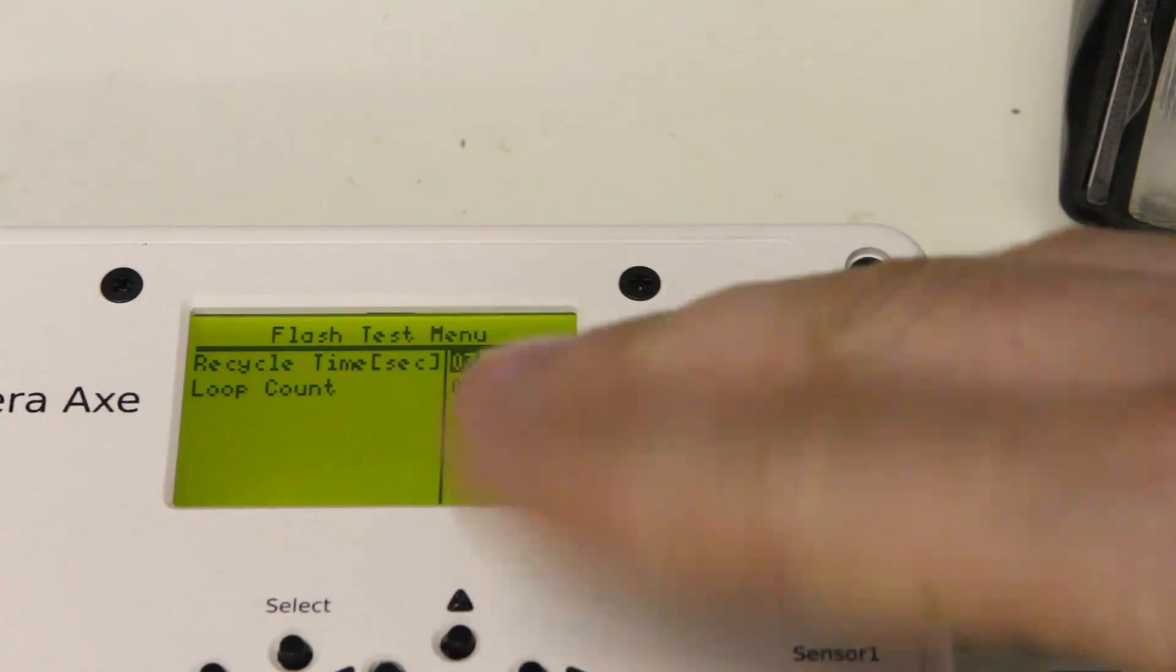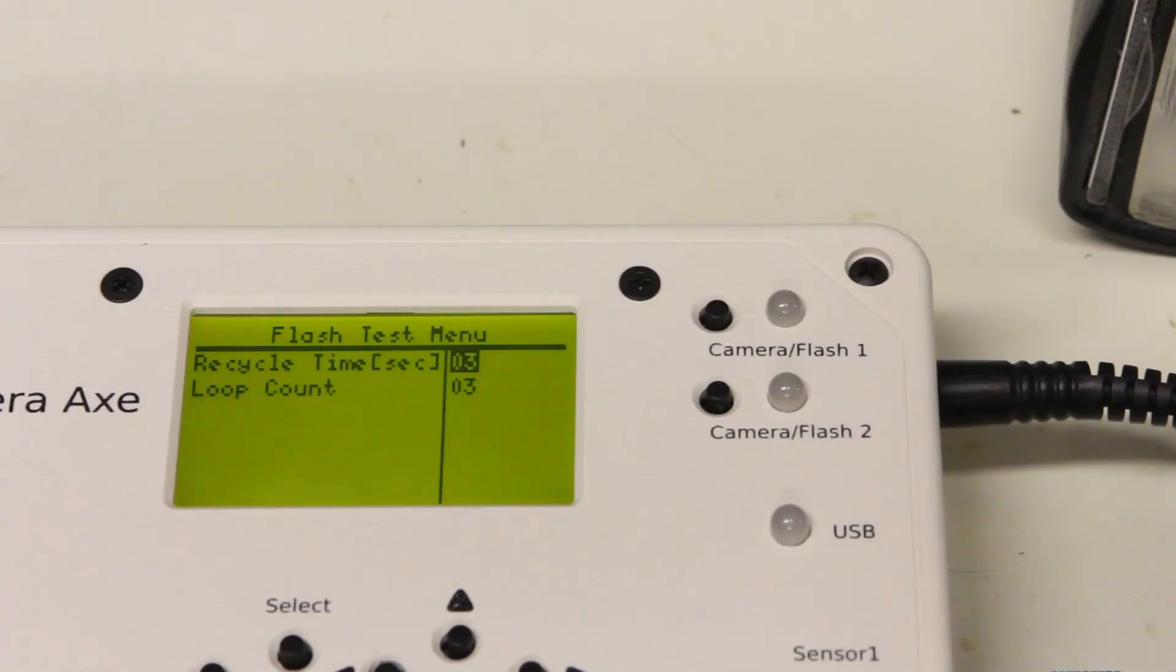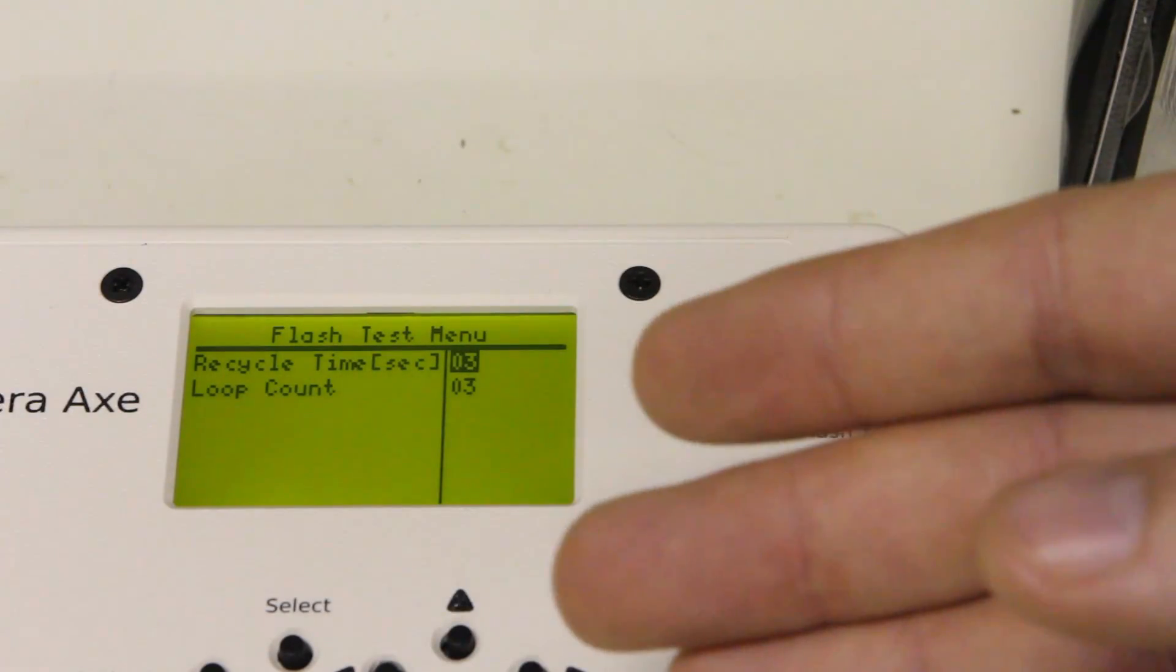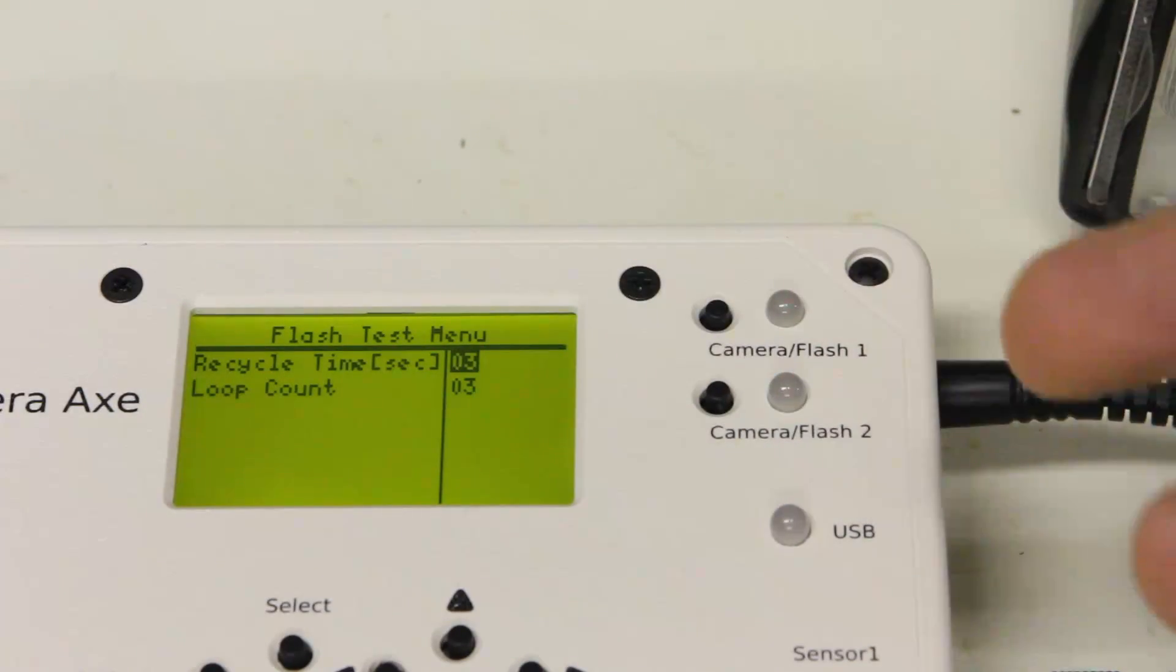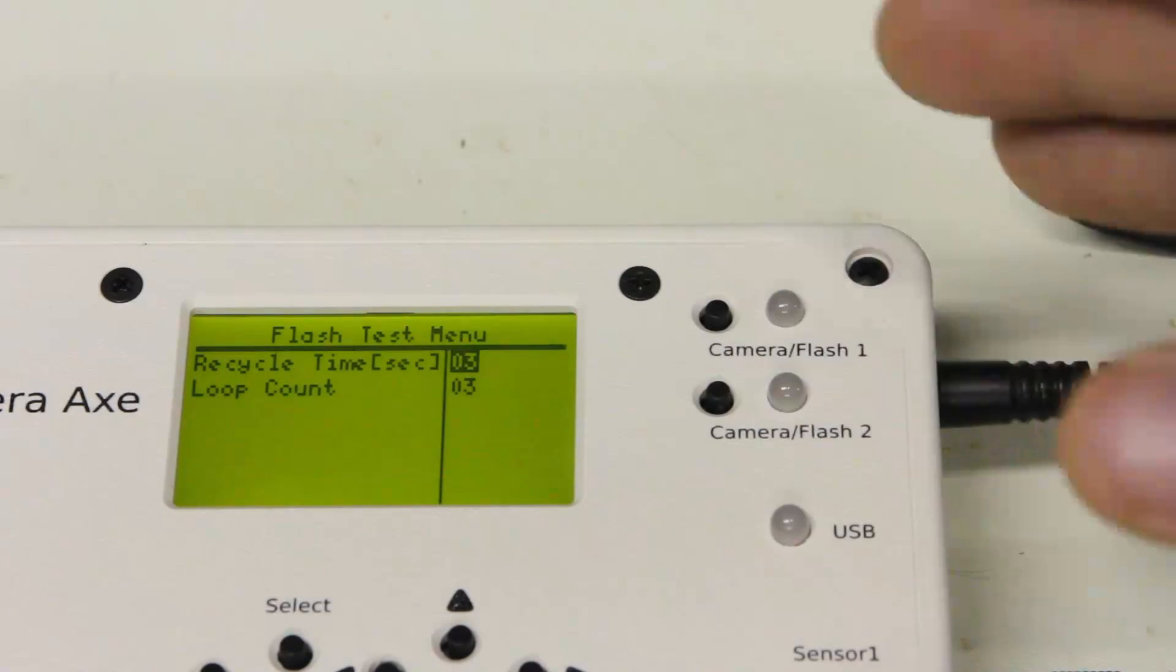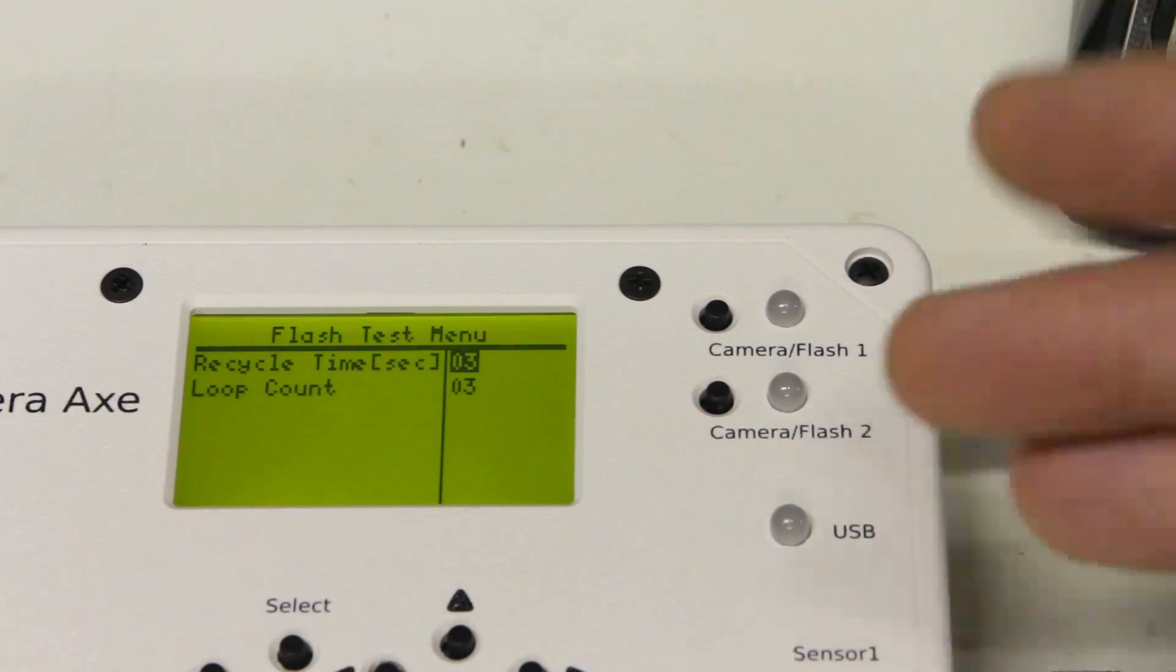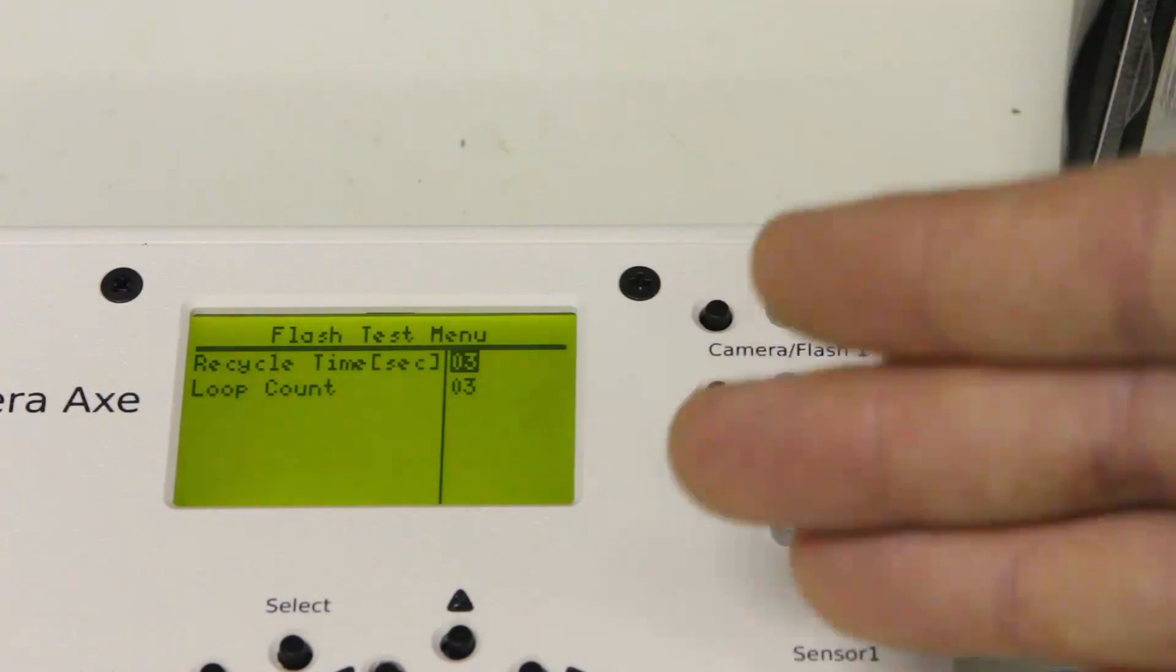The reason you want to set that to more than one or two is because we want to see if the triggering of the flash is consistent. The menu after it's recorded the three flashes in this case will provide a minimum, maximum and average for both the duration and for the lag.